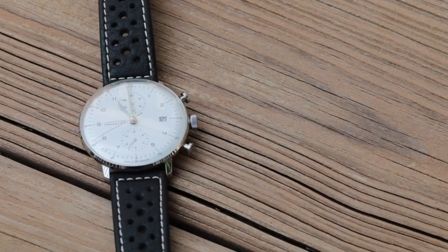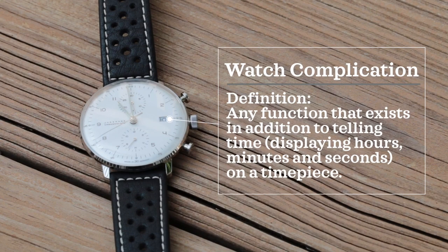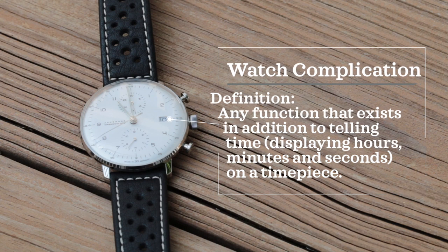Before we go into all the specific types of complications, let's first develop a baseline definition of what a complication is. A complication in the world of watches is any function that exists in addition to telling time — explaining hours, minutes, and seconds on an actual watch. There's a lot of different complications out there, some more useful than others, but let's do a deep dive into all of them because there's a lot of ambiguity around specific complications and what the differentiators are.